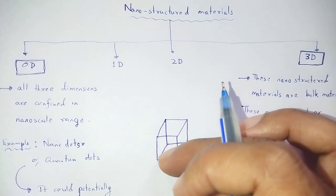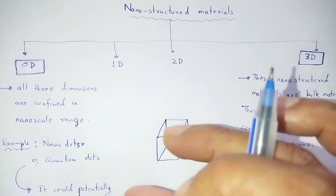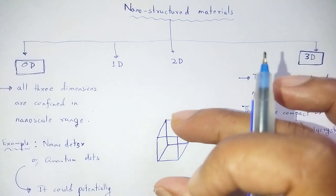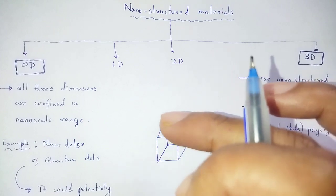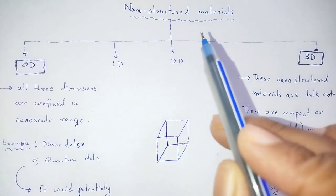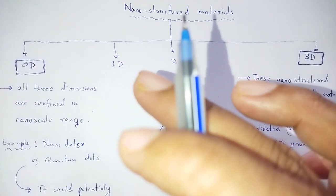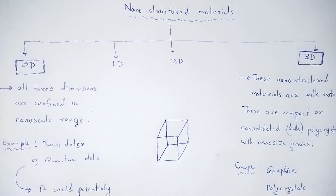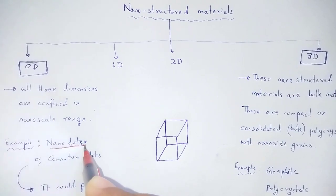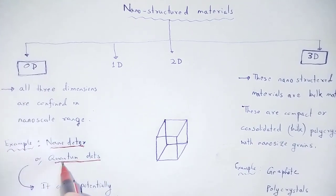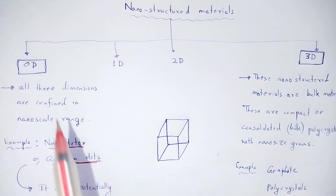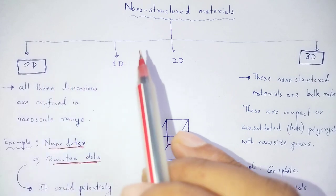When all three dimensions are confined to the nanoscale range, the 3D bulk material becomes a zero-dimensional nanostructured material. Examples of zero-dimensional nanostructured materials are nano-dots and quantum-dots.